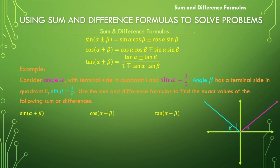We're going to use our sum and difference formulas to find the exact values of the sine of alpha plus beta, the cosine of alpha plus beta, and the tangent of alpha plus beta.